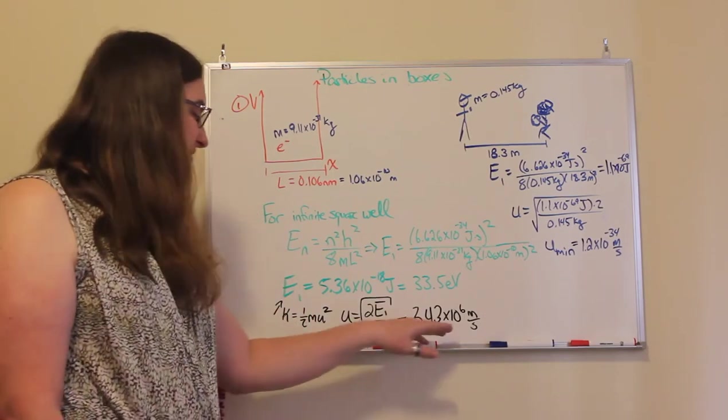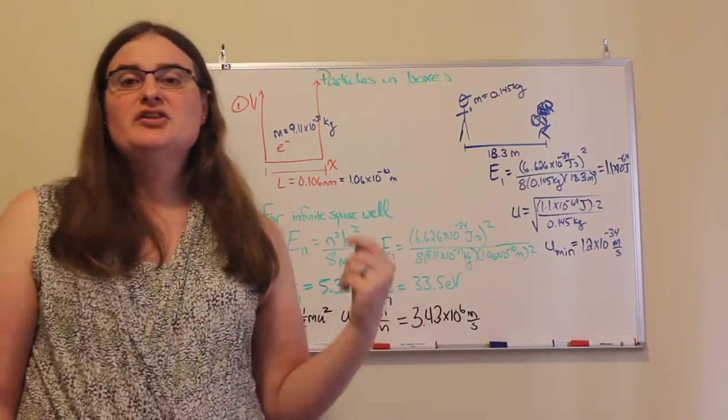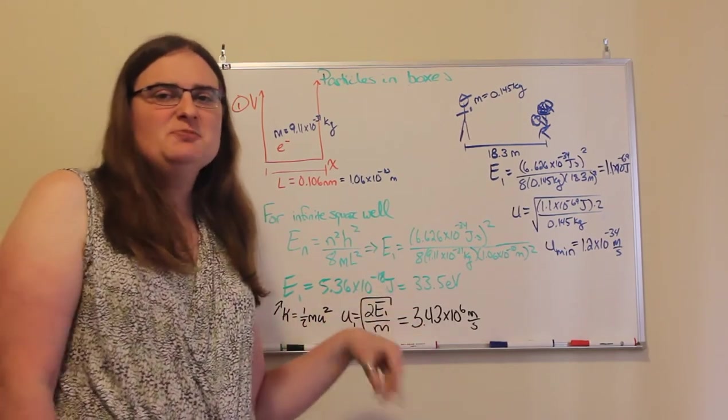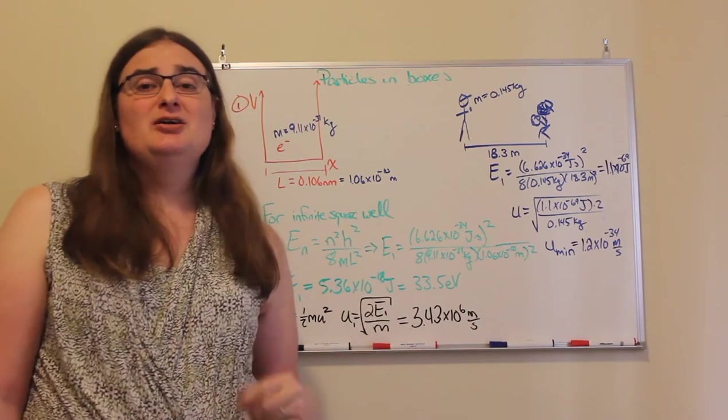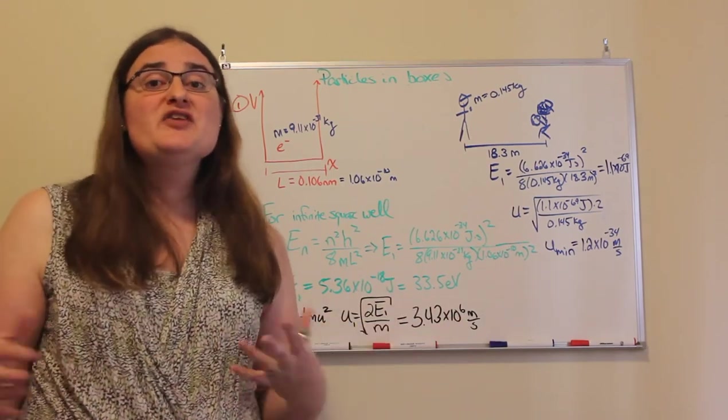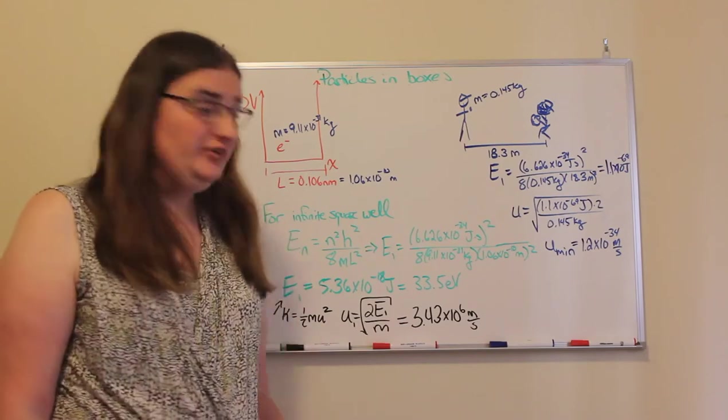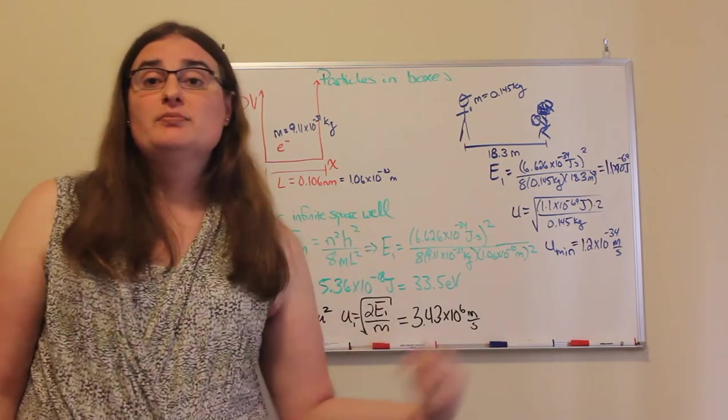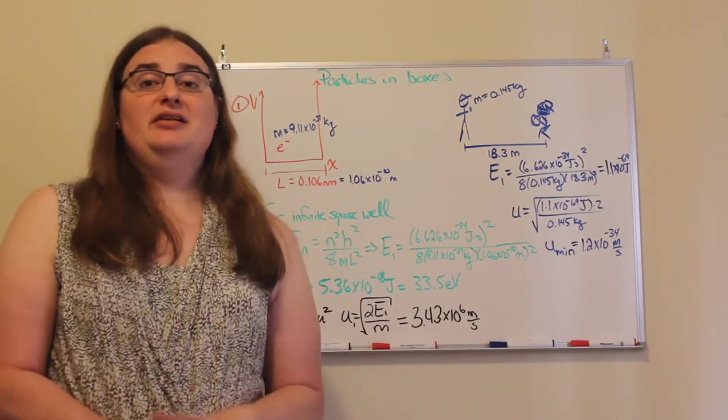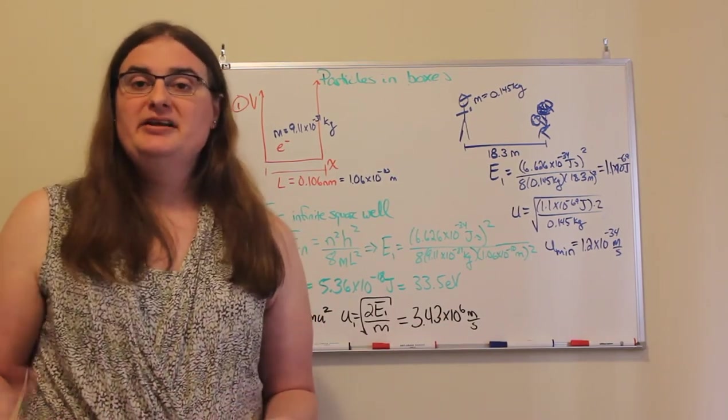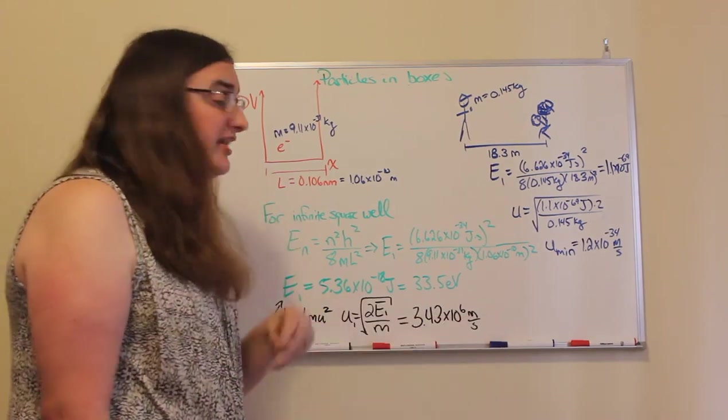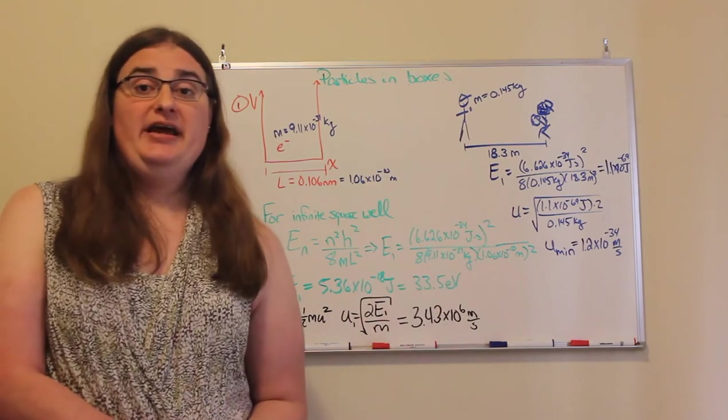And it's one one-hundredth of the speed of light, so the Lorentz factor for that speed would be pretty small. But generally, I start getting a little iffy about not using relativity once we start getting over a million meters per second. But relax, you don't run into relativistic quantum mechanics typically until you get into grad school in physics. So we're going to keep things classical as much as we can.